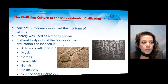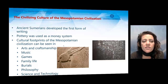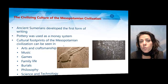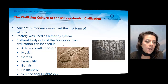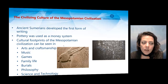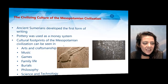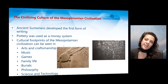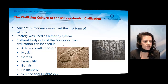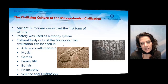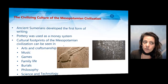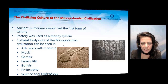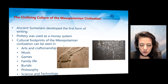From a cultural perspective, ancient Sumerians developed the first form of writing, which was quite important, and pottery was used as a money system at that time. Cultural footprints of the Mesopotamian civilization could be seen everywhere — in arts and craftsmanship, music, games, family life, burials, philosophy, science, and technology. In order to understand the culture of this civilization, we need to understand those cultural footprints.